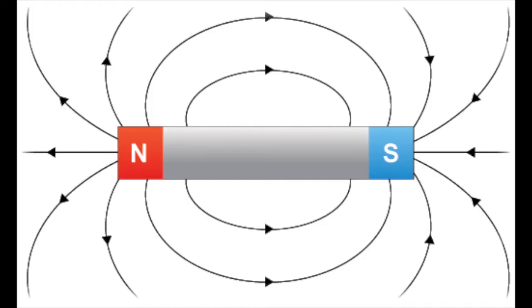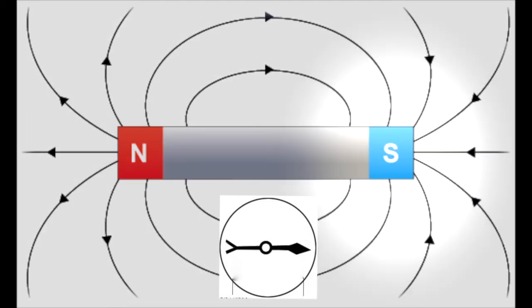Magnetic field lines have a specific direction, and it is determined by the direction which a needle of a compass would point. The direction is from the North Pole to the South Pole.